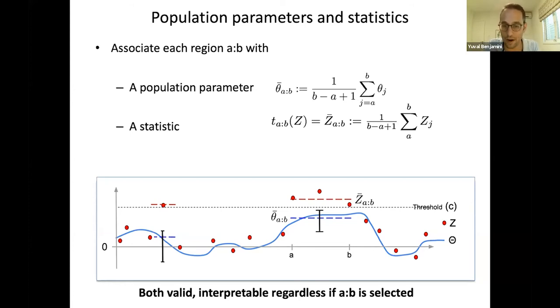One more point: what's nice about this definition of a statistic and a parameter is that this statistic and this parameter are true however we selected the model. This is a real pair, even if we decided not to select. Suppose this point was a little bit below the threshold. Then we would not select this region, we would select the smaller region. Then we would define a different parameter. Our parameter would be theta a to a plus one, and our statistic would be z bar a to a plus one. This statistic and parameter live even though sometimes they are selected and sometimes they're not selected.